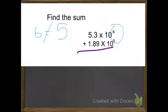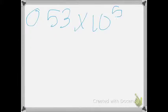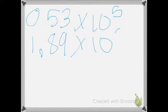So, what we do is basically, we rewrite it. So, it would be 0.53 times 10 to the 5th power and 1.89 times 10 to the 5th power.